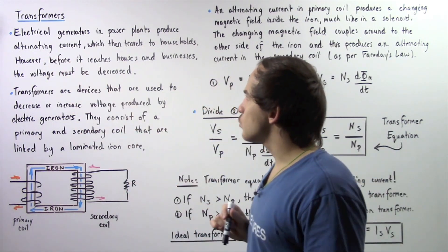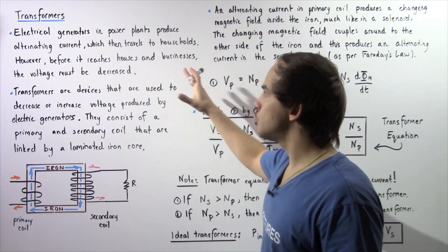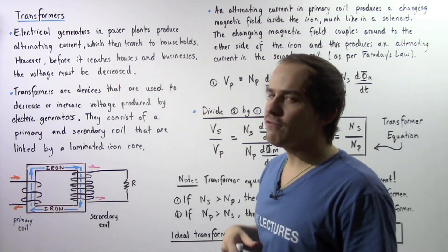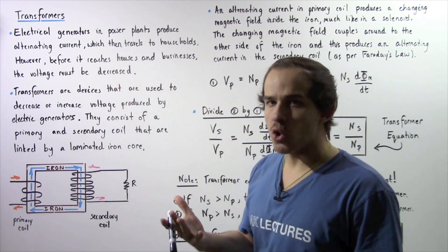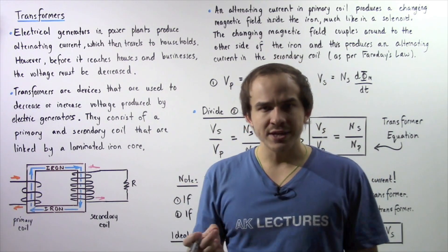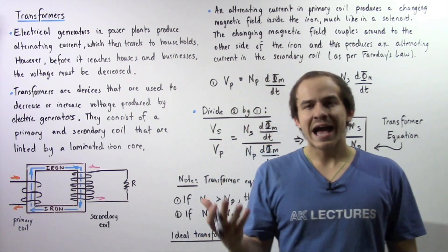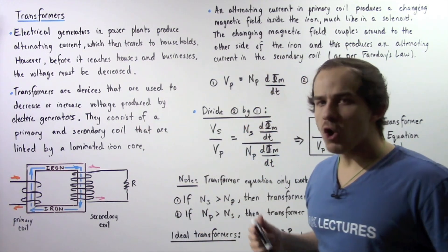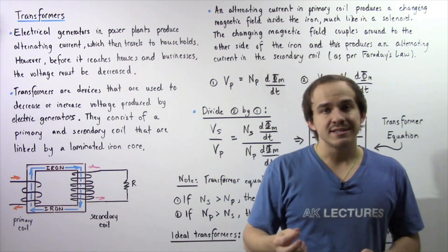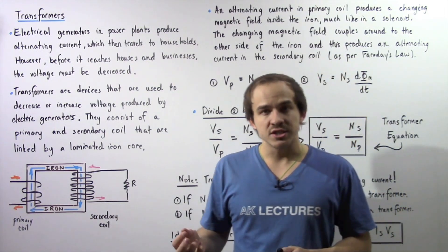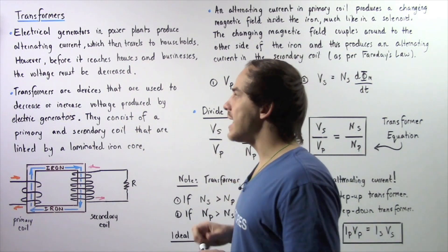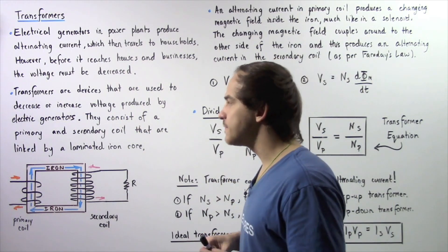Electric generators in power plants produce alternating current, which then travels to households. However, before it actually reaches the houses and buildings, the voltage must be decreased. The device that decreases or increases voltages is known as a transformer.